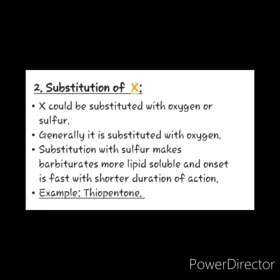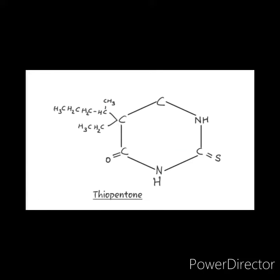Let us study about substitution at X. X could be substituted with oxygen or sulfur. Generally, it is substituted with oxygen, but substitution with sulfur makes the barbiturate more lipid soluble, and the onset is fast with a shorter duration of action. The example for this is thiopentone, which contains sulfur at the 2nd position.